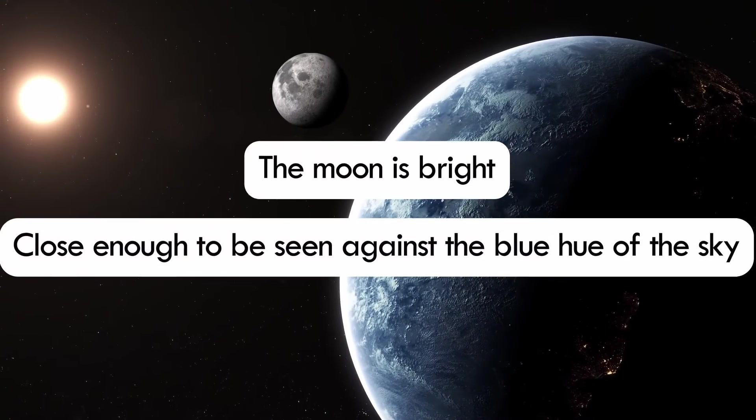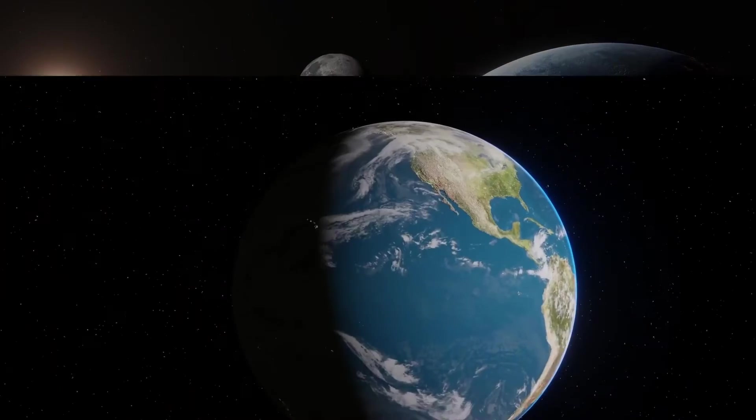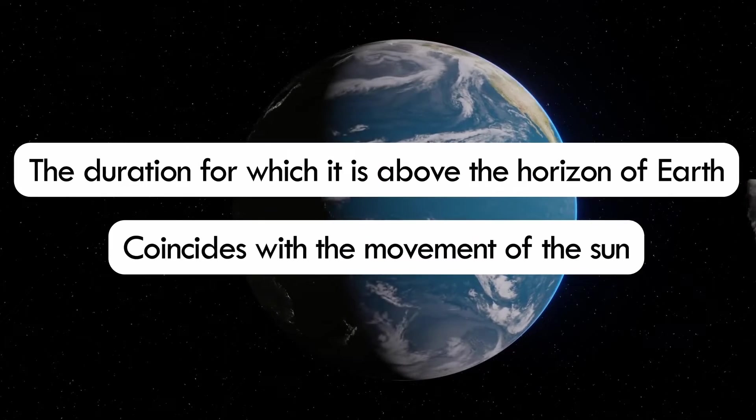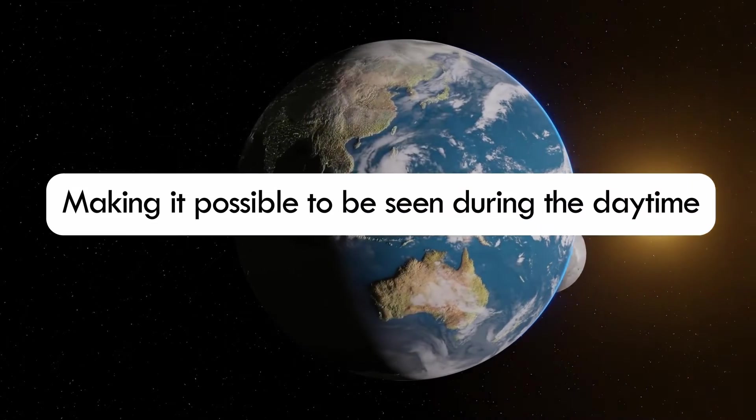There are two reasons why we sometimes see the Moon during the day. First of all, the Moon is bright and close enough to be seen against the blue hue of the sky. Secondly, the duration for which it is above the horizon of Earth coincides with the movement of the Sun, making it possible to be seen during the daytime.